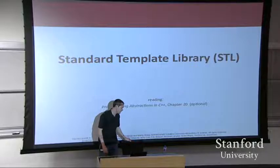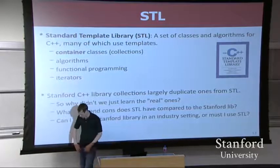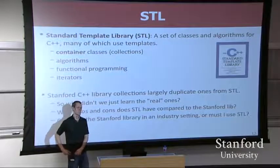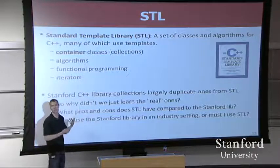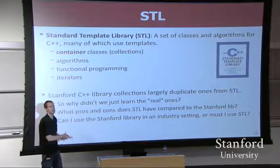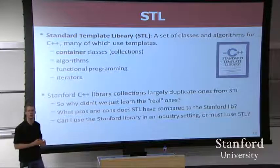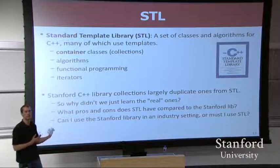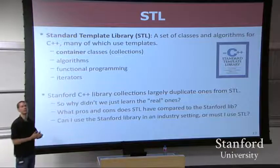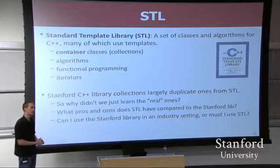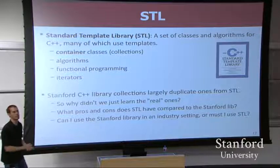The standard template library is a set of collections that come with C++. We've been using these Stanford collections that were written here by our professors, and they are custom for Stanford. They're basically only used here at Stanford, they're internal. But you might have wondered, what do most people do if they don't go to Stanford and they want to use data structures in C++? Well, they use the STL, the library of data structures that comes with the language. And the S is for standard, so it's a standard part of the language. Any major version of C++ will have these things.